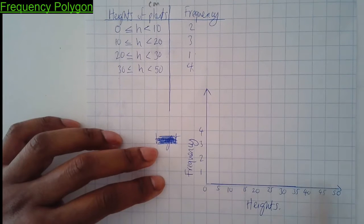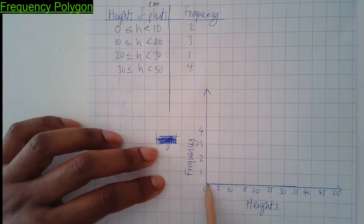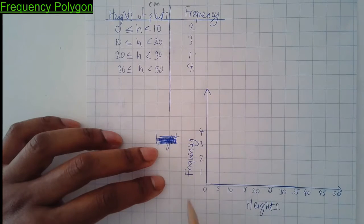And here's the graph, the axes. You've got the heights this way and the frequency, number of plants. So I need to plot this.